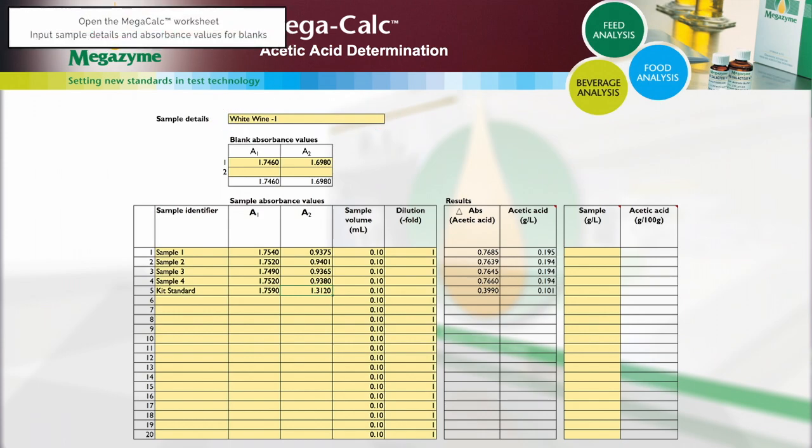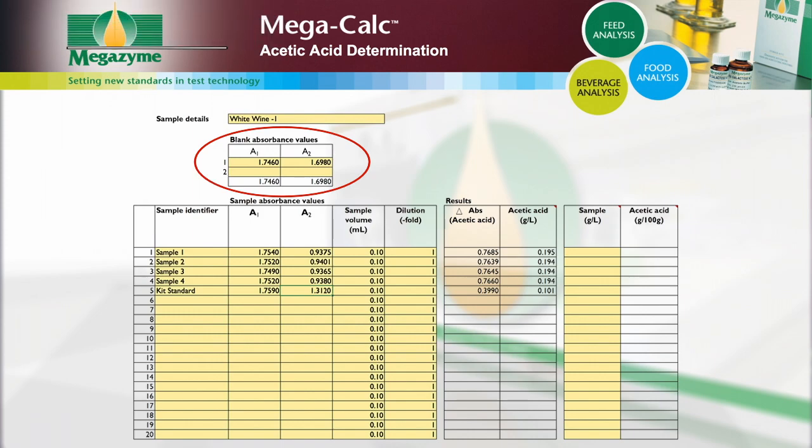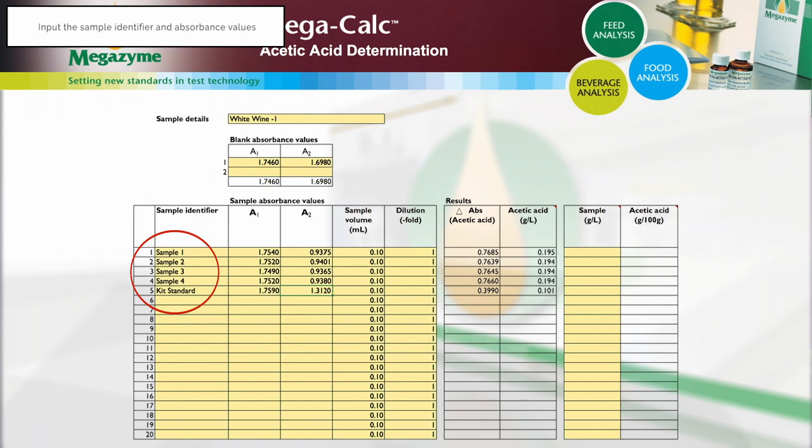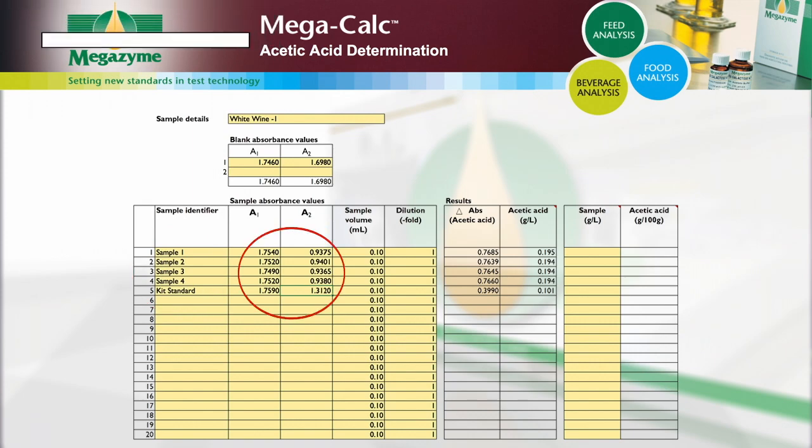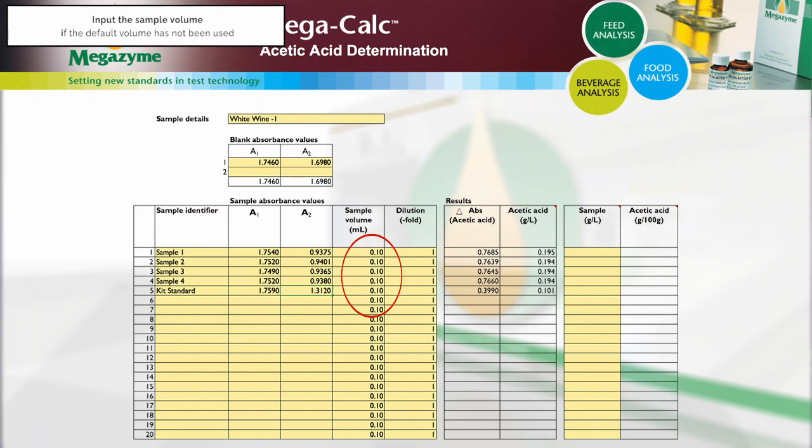Sample details. Absorbance readings for the blanks. For each sample, input the sample identifier and the absorbance values for the samples. Alter the sample volume if a volume other than the default 0.1 ml is used.